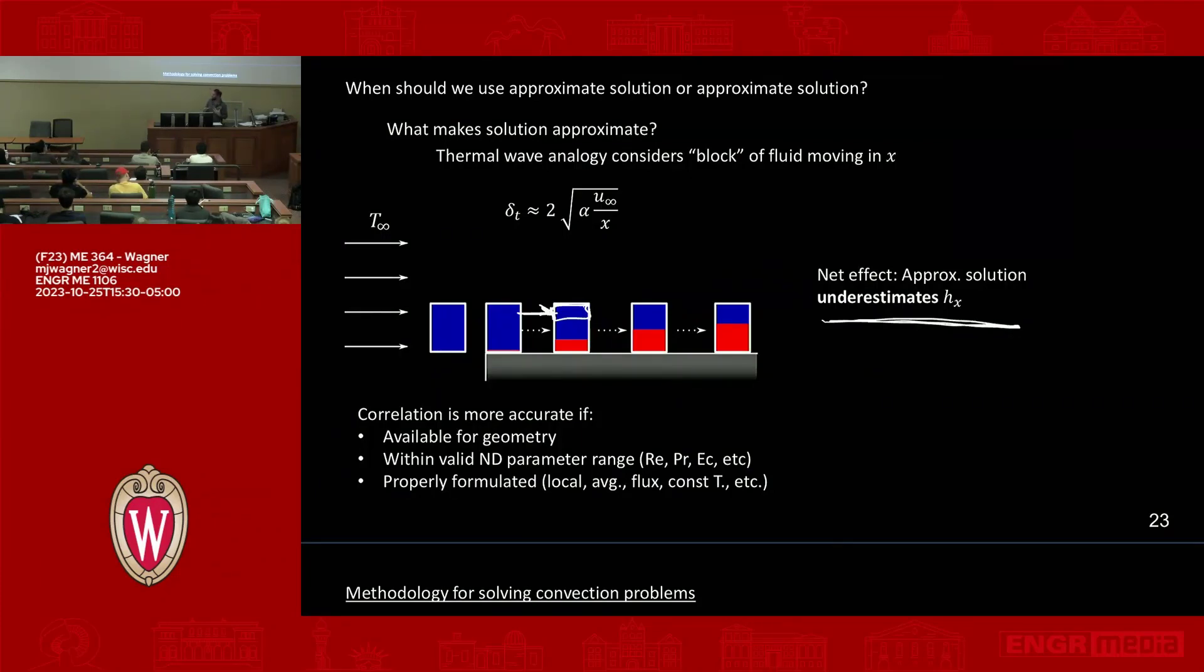So all of this in mind, the correlation is more accurate if it's available for the geometry that you're looking at, if it's within a valid non-dimensional parameter range. So you compute the Reynolds number, the Prandtl number, the Eckert number, and the correlation says you're in the valid range for what we used to develop the correlation in the first place. So it's more accurate then.